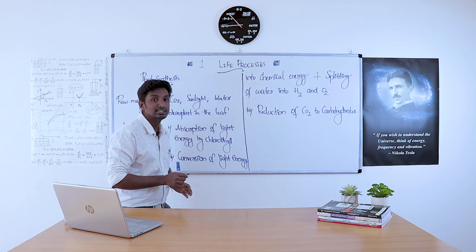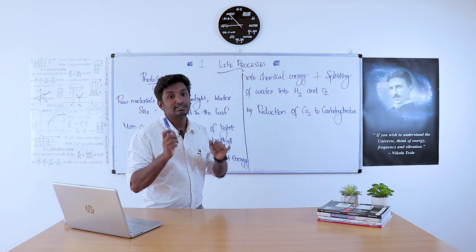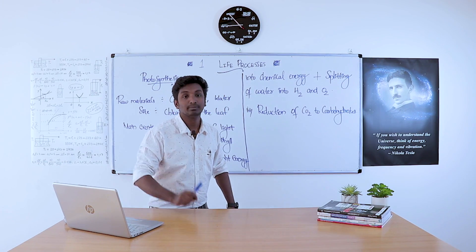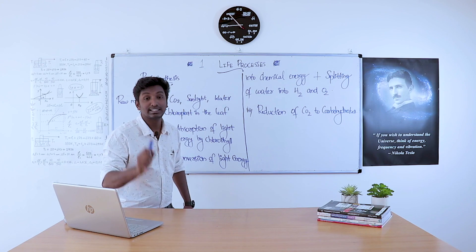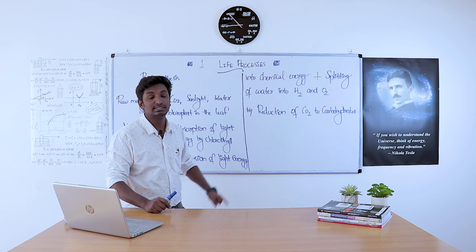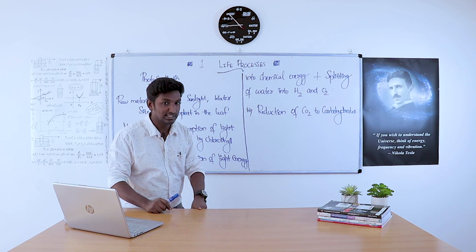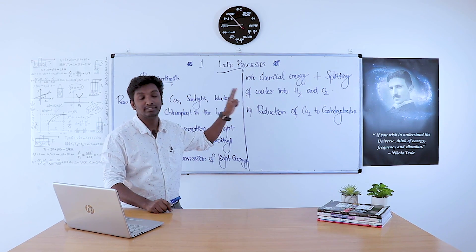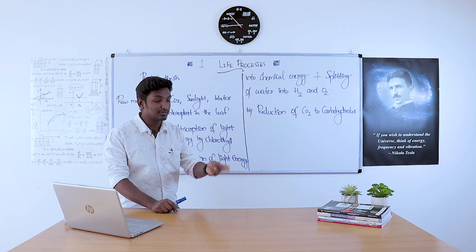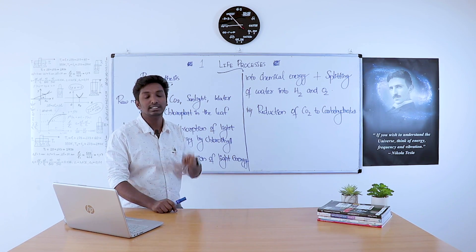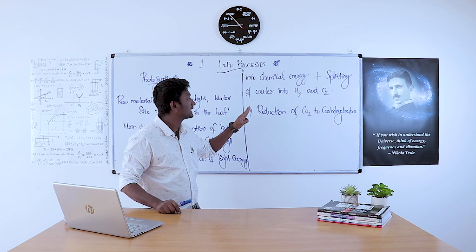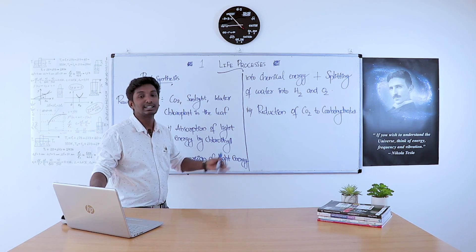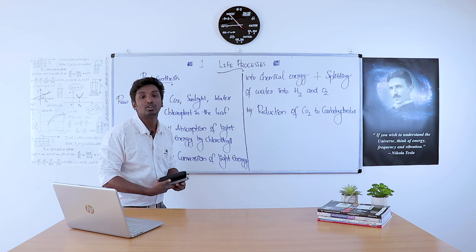To summarize: the raw materials are sunlight, carbon dioxide, and water. The site of photosynthesis is the chloroplast in the leaf. The three events are: first, absorption of light energy by chlorophyll; second, conversion of light energy to chemical energy and splitting of water into hydrogen and oxygen; third, reduction of carbon dioxide to carbohydrates.